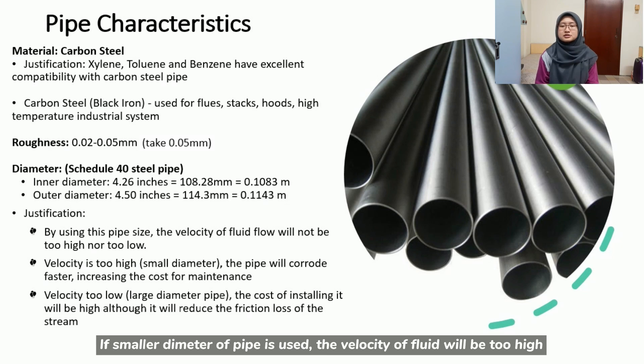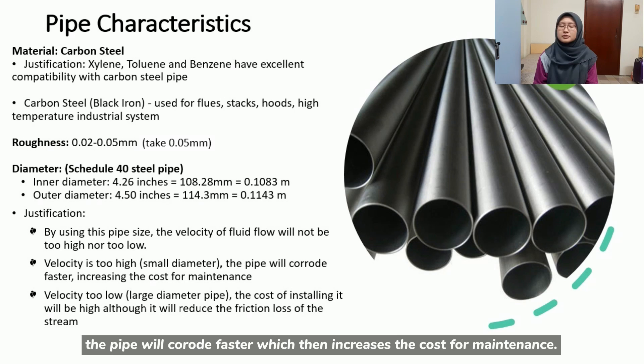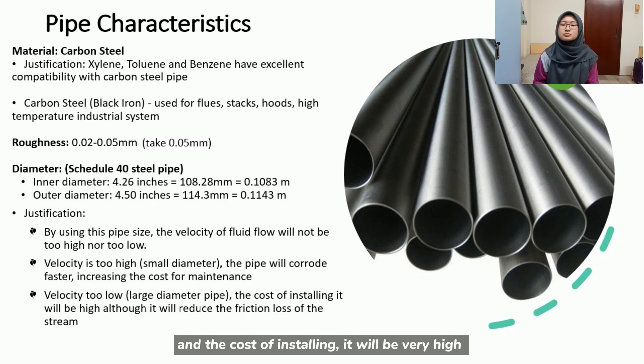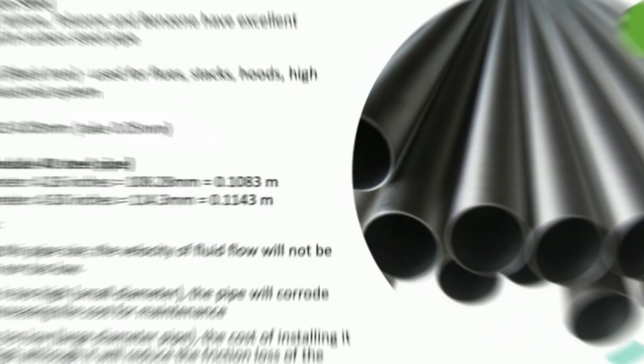If smaller diameter of pipe is used, velocity of fluid will be too high, the pipe will corrode faster which then increases the cost for maintenance. If larger diameter pipe is used, velocity of fluid will be too low and the cost will be very high although the friction loss of the streams is reduced.